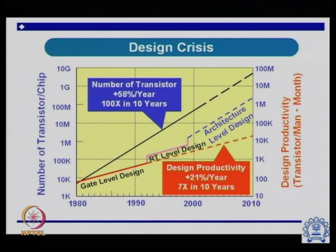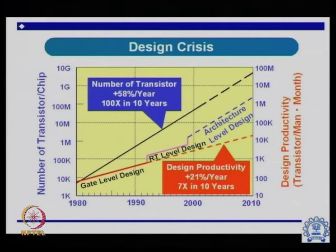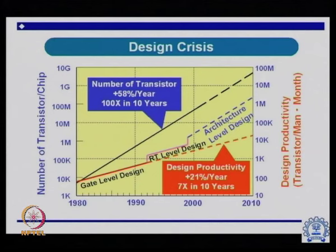One major concern is that there are not sufficient engineers who can work at the architectural or RTL level. There are also those who still believe that gate-level or transistor-level design is very relevant. These designs are generated as IPs — intellectual property circuits — which can be employed directly at the RTL or architectural level.